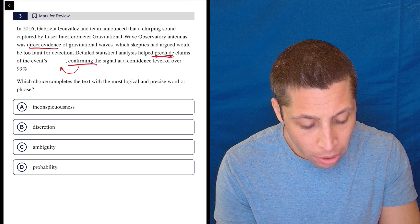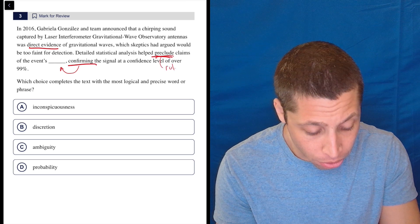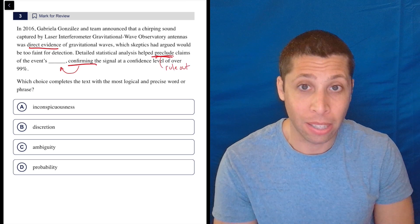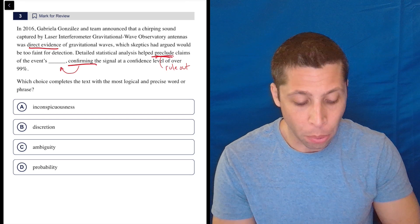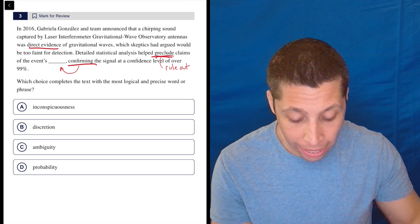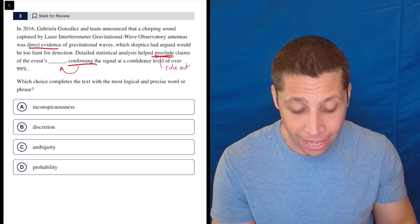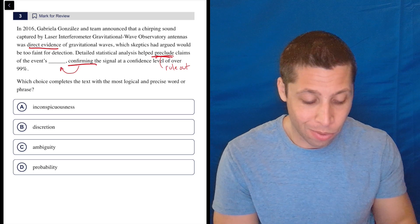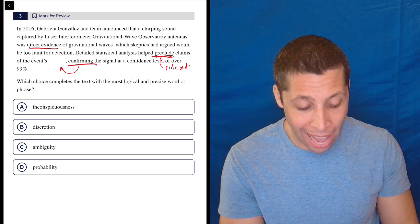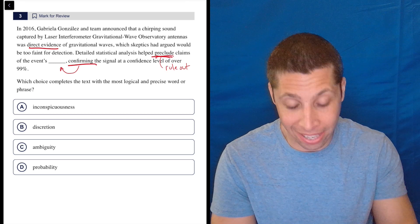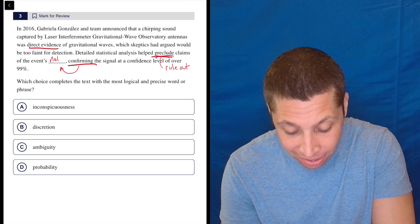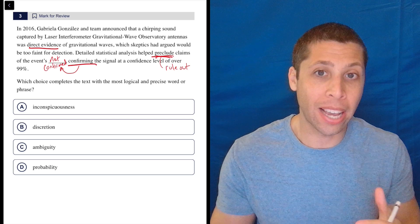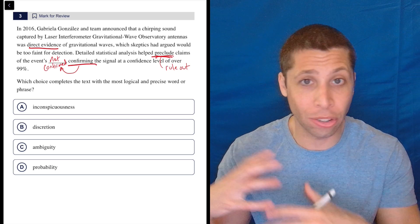To preclude means to rule out, to say it's not true, it's not relevant. So if we're precluding or ruling out claims that the event is blank by confirming it, then we want to say we're ruling out claims that it's not confirmed. These are kind of opposites here, right? We have that double negative thing going on. This is definitely a twisted question. It's hard to untangle. The word preclude is a really nasty turn because it's just not a word a lot of people know.